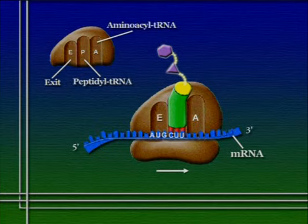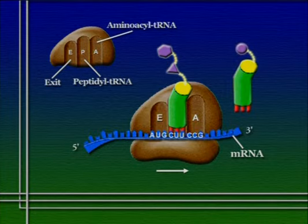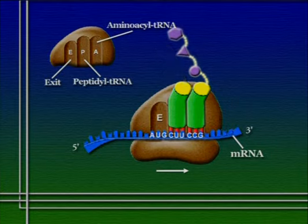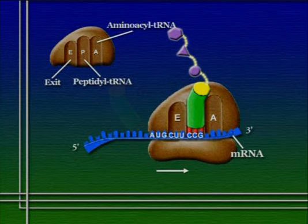Now we have a tRNA in the P site with two amino acids attached, and a new codon in the A site — the third codon in the sequence. The appropriate tRNA for that codon comes in, the ribosome catalyzes the bond, giving us a three-amino-acid chain. The mRNA and ribosome slide past each other with translocation again, and this process continues hundreds or even thousands of times, adding in sequence all the appropriate amino acids.